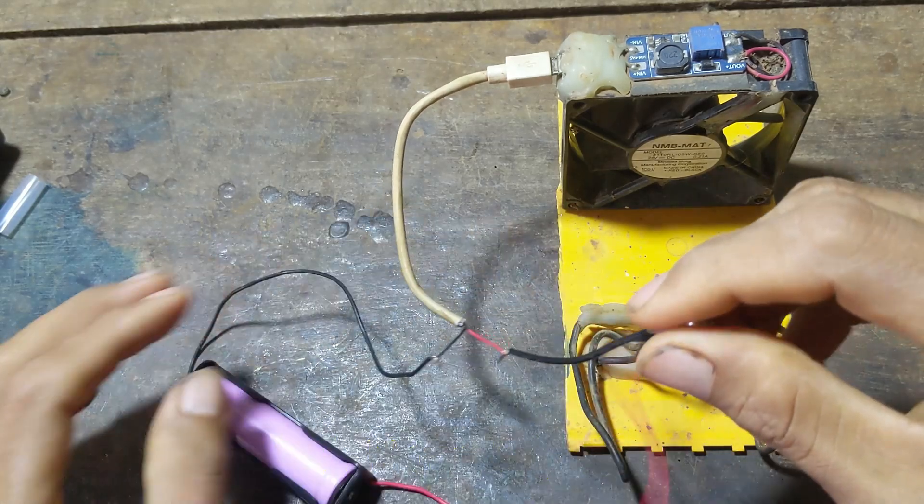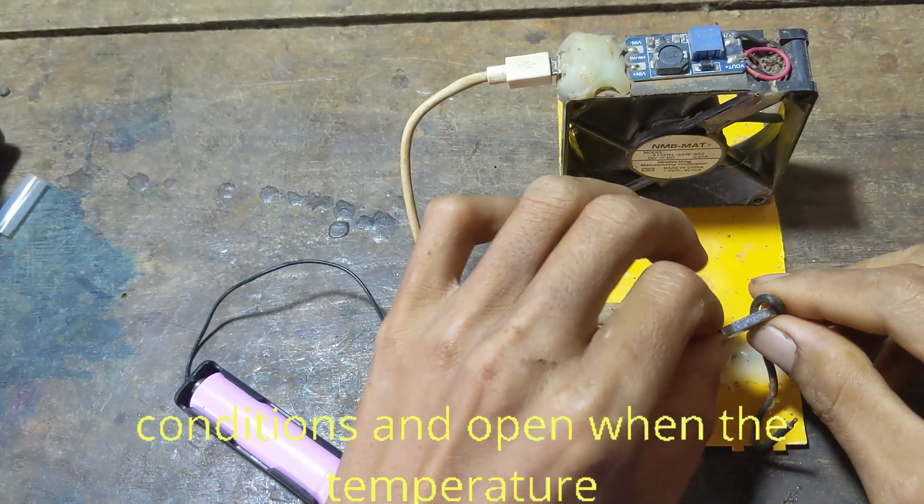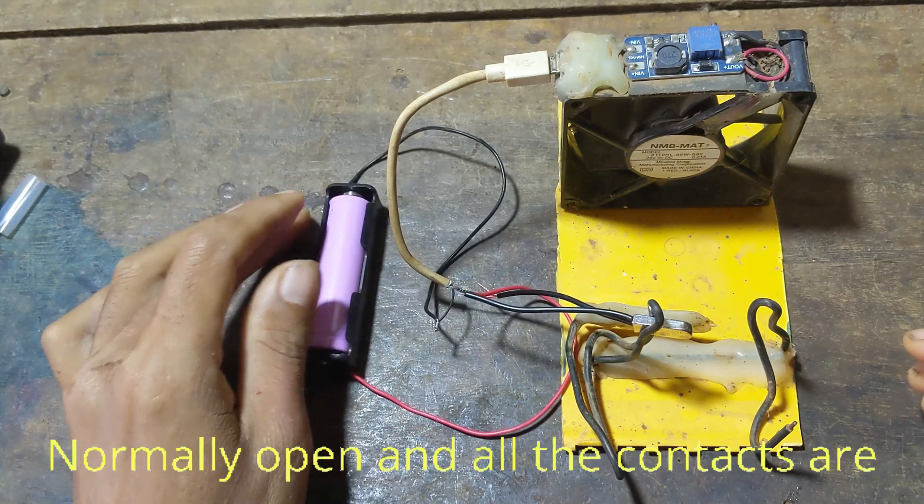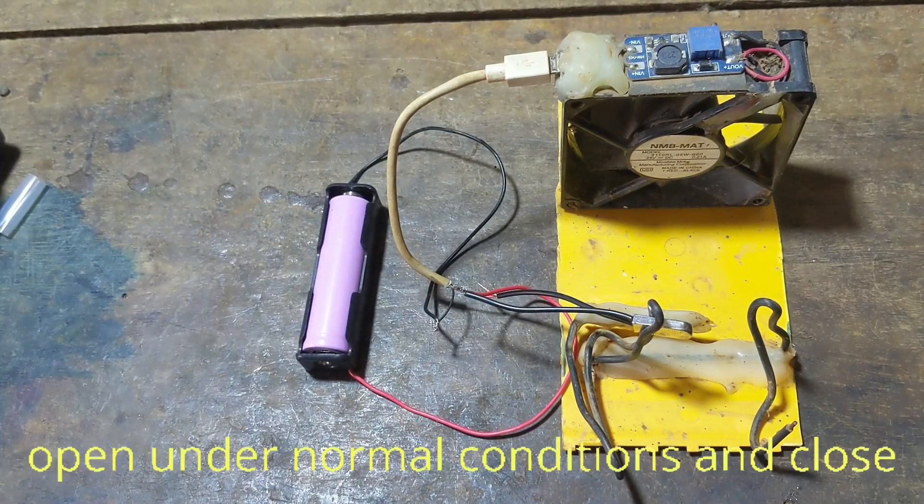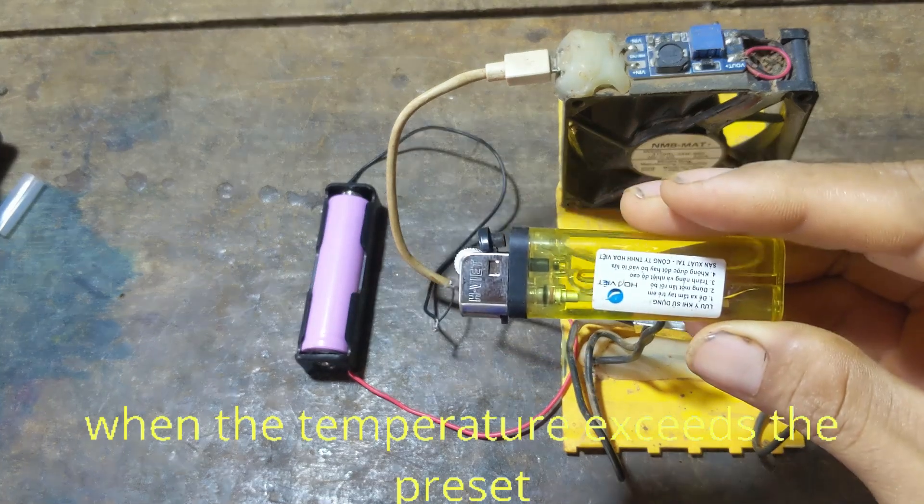Normally closed (NC): the contacts are closed under normal conditions and open when the temperature exceeds the preset value. Normally open (NO): the contacts are open under normal conditions and close when the temperature exceeds the preset value.